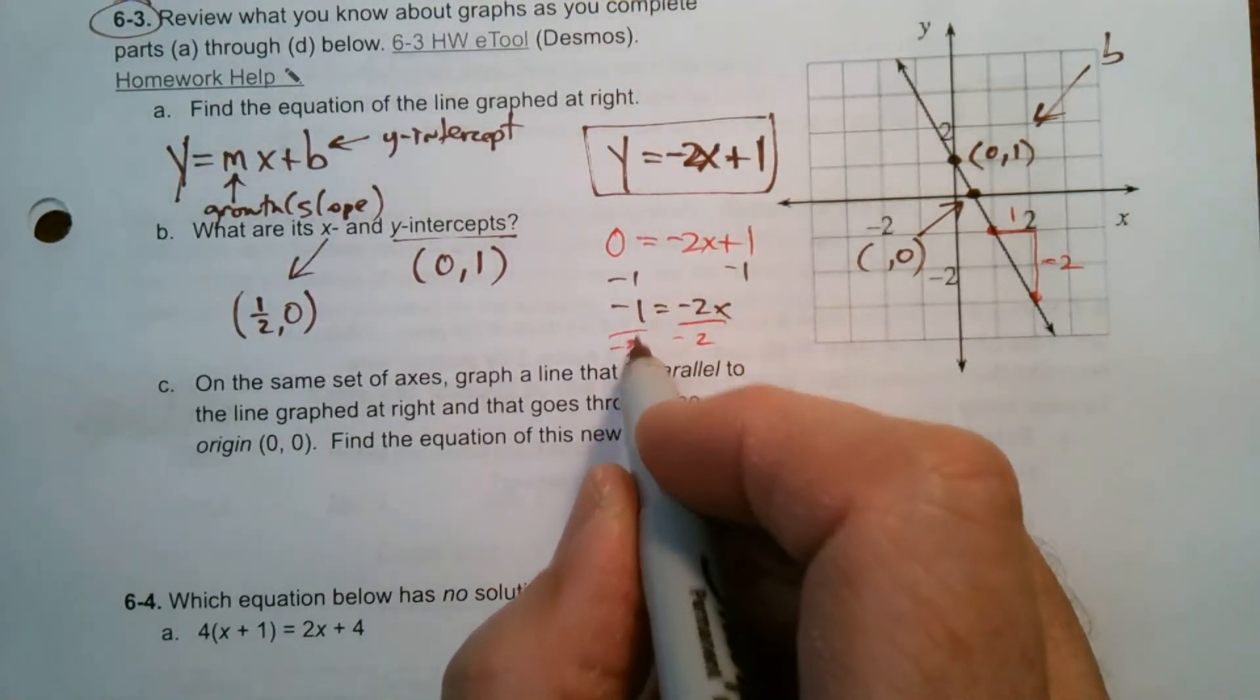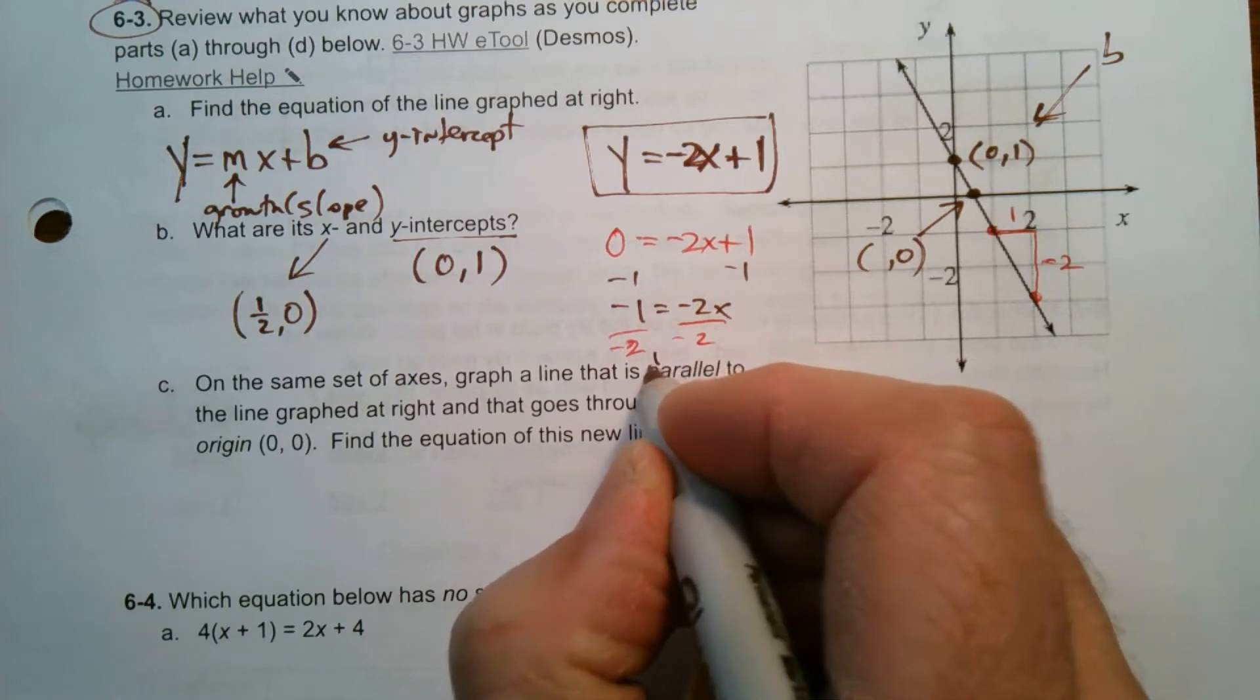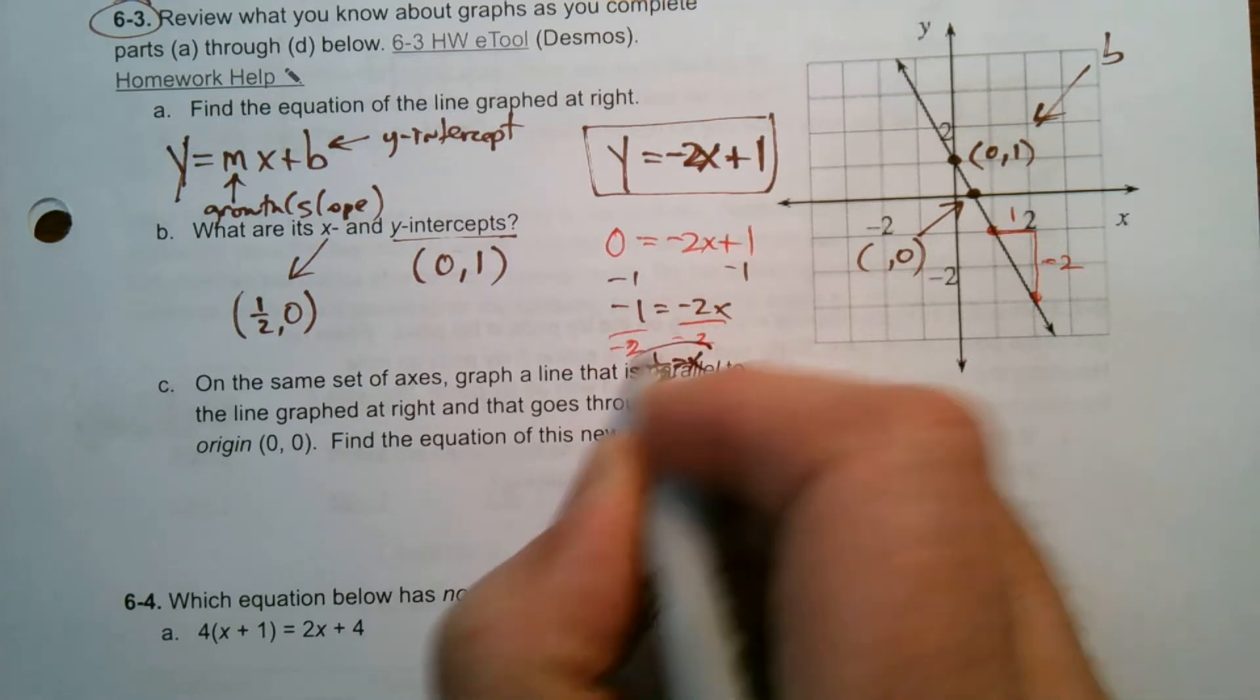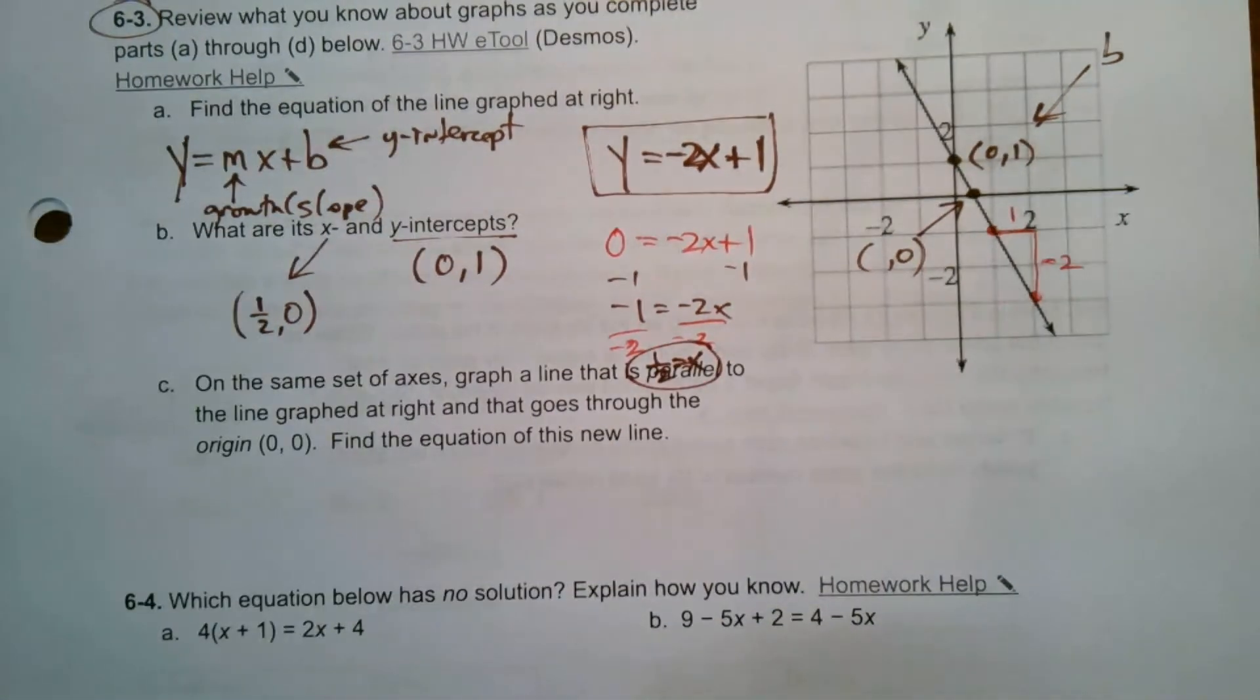And there it is. x is going to equal negative 1 over negative 2, which is 1 half. So that would give me 1 half equals x, right? So I know my x is 1 half.